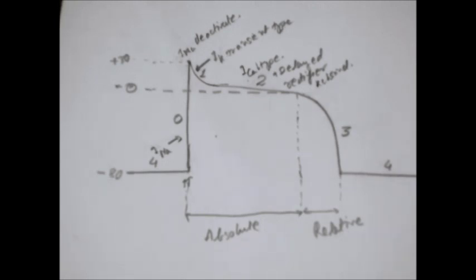In the relative refractory period, some sodium channels start to recover, leading to some depolarization potential that can be generated during this period.